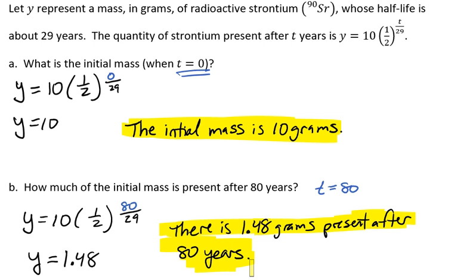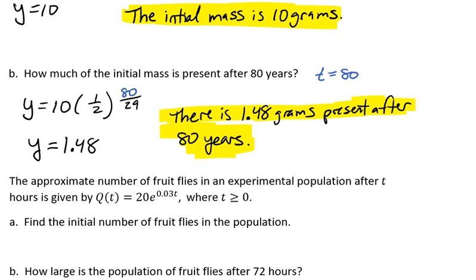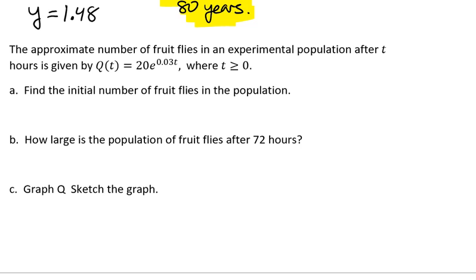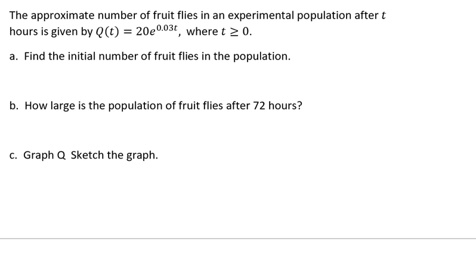Let's do a population growth problem. This one's a little bit more involved. The approximate number of fruit flies in an experimental population after t hours is given by Q of t equals 20 times e raised to the 0.03t, where t is greater than or equal to 0.